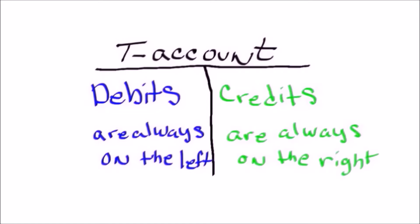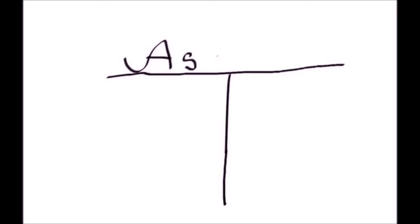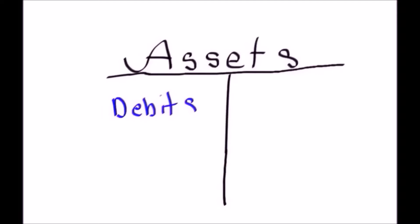Now let's look at how assets and liabilities are recorded. When dealing with asset accounts for journal entries, assets are basically thought of as resources that the company or the small business owns. If it's categorized as a debit for the t-account, what that means is that the asset has increased the balance of that particular account. So if it increases the balance and it's an asset, that means it goes on the debit side.